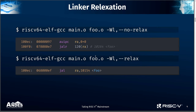Then as we try to link this object file with FOO defined in another object file, the linker lays out the functions, computes the offset, and then applies the relocation. However, we can see that this callee is only 120 bytes apart, which is within the range of RISC-V's JAL instruction. So an optimized linker should be able to rewrite this code sequence down to a single JAL instruction, which saves one instruction and also four bytes. This optimization to rewrite code sequences with shorter and more efficient ones is what we call linker relaxation.